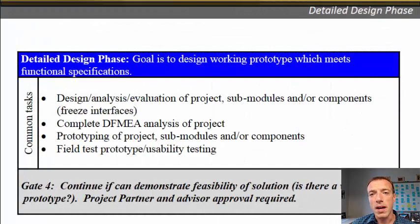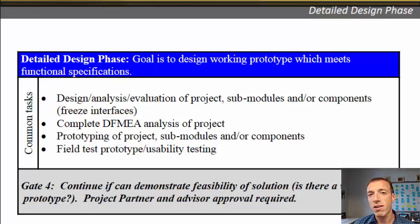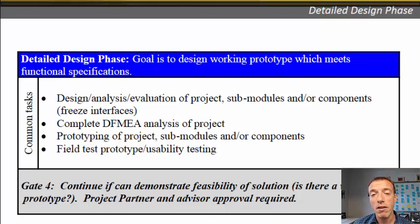The next phase of the EPICS design process is the detailed design phase. At this point you have one or maybe two really solid concepts and you're going to work them up into a quality of design that you can actually manufacture. One thing you'll do is bottom-up design — you've done top-down thinking through conceptual design at the system level, and now you're making each individual component really completely designed. You might do risk analysis to figure out what could go wrong, and hopefully you'll start risk analysis much earlier. You may do final prototyping and usability testing in the actual field environment. This phase ends when you can demonstrate feasibility and you're ready to build and deliver the final product.